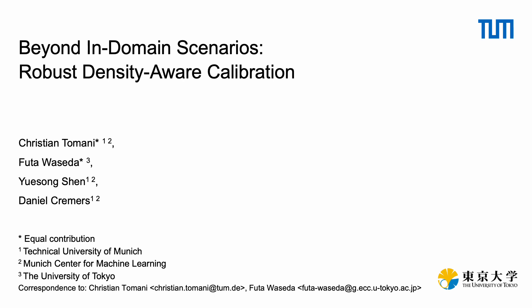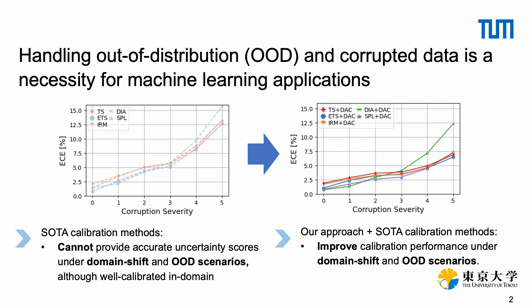Welcome to my talk on robust density-aware calibration. Neural network-based systems are being increasingly deployed in the real world. In such practical settings, the models must yield not only high accuracy,